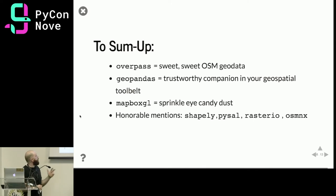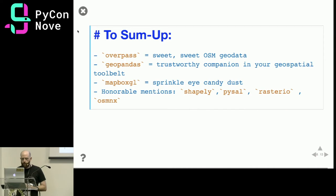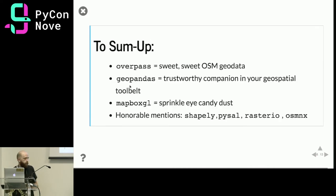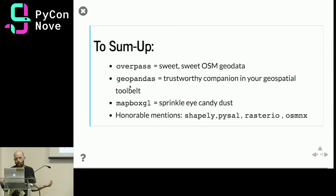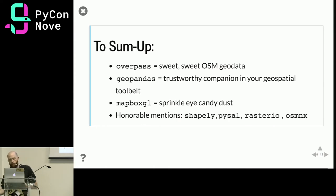To sum up, we saw three main libraries: Overpass for downloading geodata from OpenStreetMap, GeoPandas as the cornerstone of spatial analysis in Python, and Mapbox GL for displaying the data. I didn't have time to go over PySAL — the Python Spatial Analysis Library, which allows you to do spatial regressions and check for spatial autocorrelation — or rasterio, which is widely used to work with georeferenced imagery. With that I conclude, thank you.